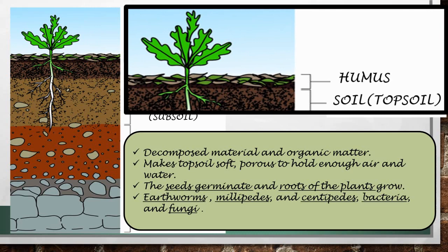Horizon A, or topsoil, is also called the humus layer. The humus layer consists of decomposed material and organic matter. This is why the topsoil has a dark brown color. Humus makes the topsoil soft and porous to hold enough air and water. In this layer, seeds germinate and the roots of plants grow. Many living organisms like earthworms, millipedes, centipedes, bacteria, and fungi are found in this layer.